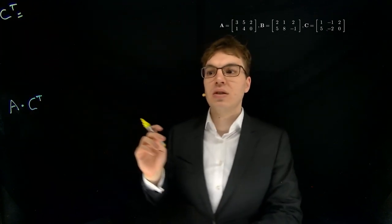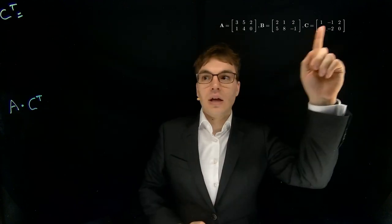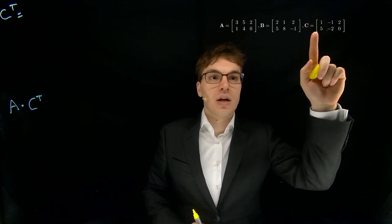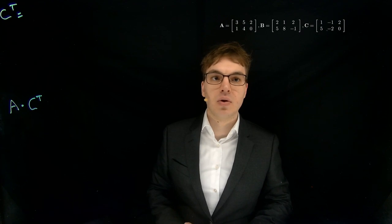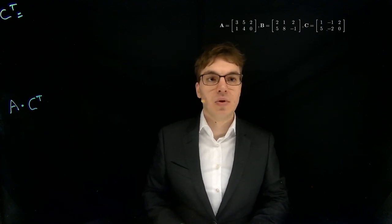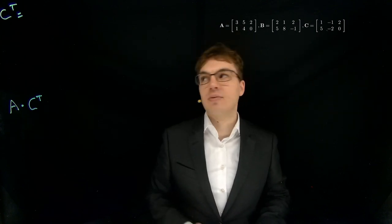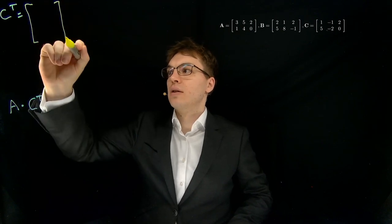And transposition means that we are basically flipping the matrix. So as you can see here we have a 2 times 3 matrix. It's always the number of rows before the number of columns. And from this 2 times 3 matrix the transposition creates a 3 times 2 matrix. So we know that we are going to get something like this.